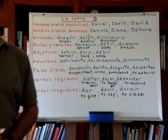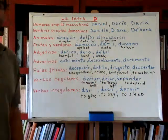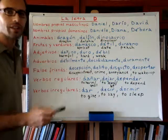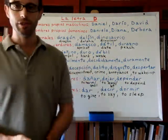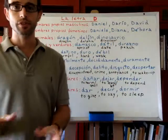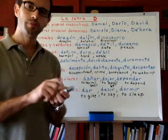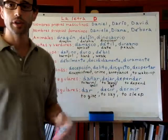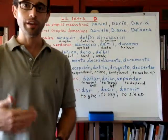Now we will see some adjectives that begin with the letter D. Dañino — notice the ñ — dañino means harmful. We have duro, which means hard, both in the literal sense and in the figurative sense. Duro can describe an object that is hard, or an attitude towards someone.